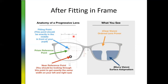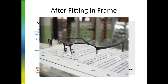Exactly at 17 mm — that is, the midpoint between the two micro-etchings — you will have the prism reference point, and above it you will have the fitting cross. Once the lens is fitted, it will look like a plain lens. You will see some blurry vision in the periphery of the lens, and there will be no markings visible from the outside or with the naked eye.